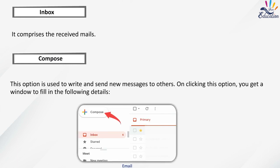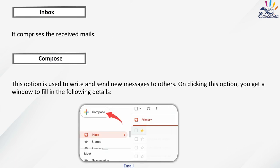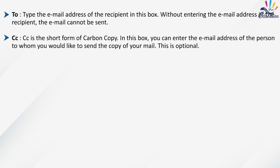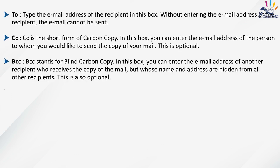Inbox: It comprises the received mails. Compose: This option is used to write and send new messages to others. On clicking this option, you get a window to fill in the following details. Type the email address of the recipient in the To box — without entering the recipient's email address, the email cannot be sent.